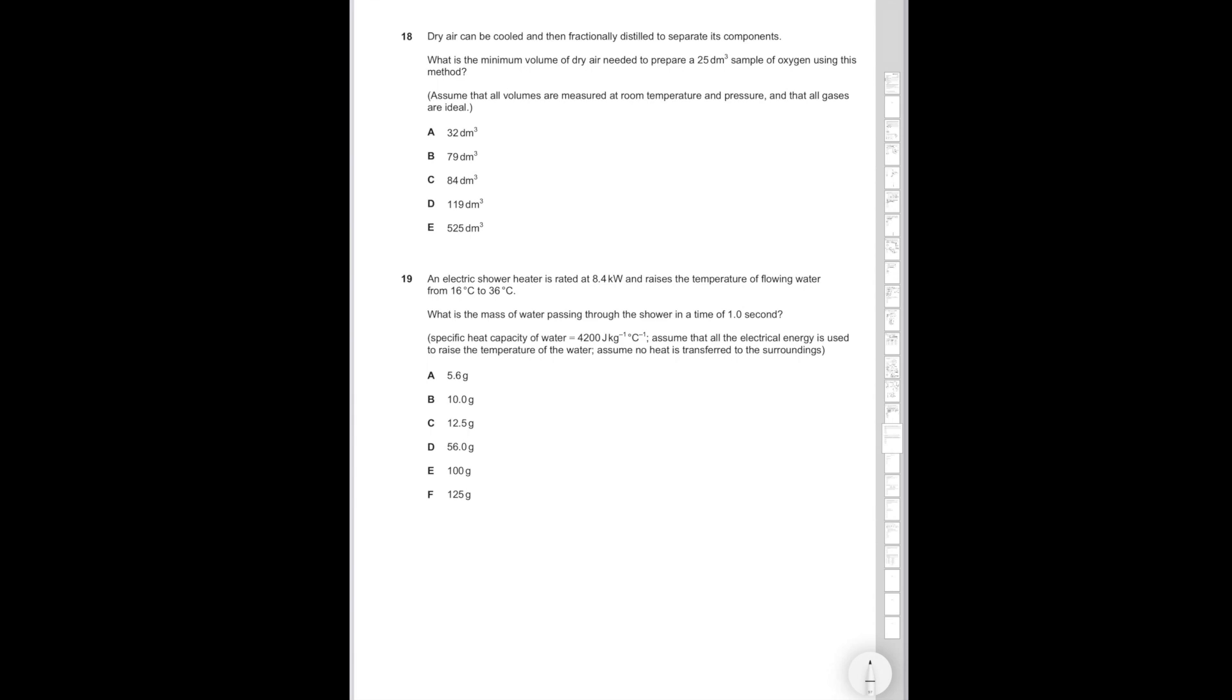Let's start with question 18. Dry air can be cooled and then fractionally distilled to separate its components. What is the minimum volume of dry air needed to prepare a 25 decimetre cubed sample of oxygen using this method? Assume that all volumes are measured at RTP and that all gases are ideal. We know that oxygen is roughly equal to 20% of the air. So 25 times 5 is equal to 125 dm cubed to find the total volume. We want to look for the answer option that is the closest to 125 decimetres cubed. That's answer option D, which is the correct answer. Simple enough.